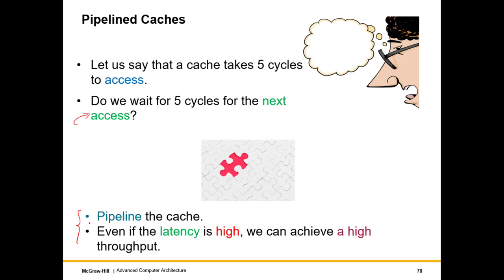We will instead pipeline the cache, which means that at least we can accept a new request if not every cycle then once every one or two cycles. The latency can be high, but what pipelining gives us is high throughput. Even if the latency is high, if we pipeline the cache we can ensure that our throughput is high, and many throughput-dependent applications will benefit from this design.